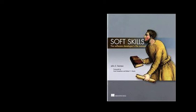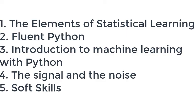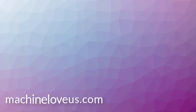So, those are the top five. One, the elements of statistical learning. Two, fluent Python. Three, introduction to machine learning with Python. Four, the signal and the noise. And five, soft skills. Now, as you progress in your data science journey, you'll naturally start moving away from reading textbooks to reading papers. And reading papers is a different kind of animal than reading books. And we'll go over that in another video. But for now, please visit us at machineloveus.com. Hope to see you there. Bye.